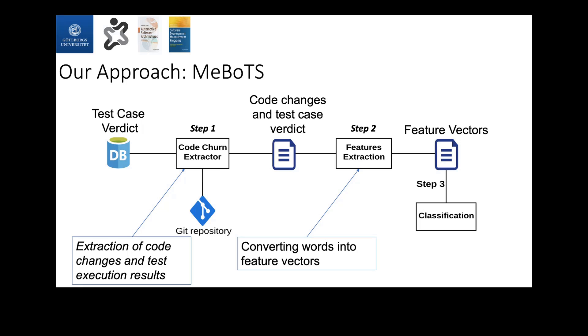The first step of the method is about extracting code changes from history logs in version control system and the test execution results from different data stores. The next step is to feed those extracted code changes into a feature extraction algorithm to convert the input code into some feature vectors that we can use in step three for training a machine learning model.